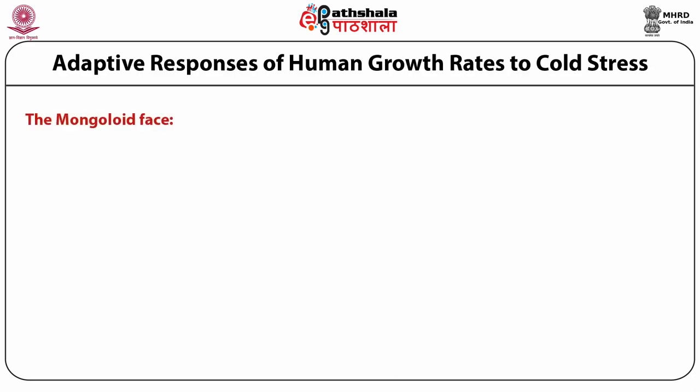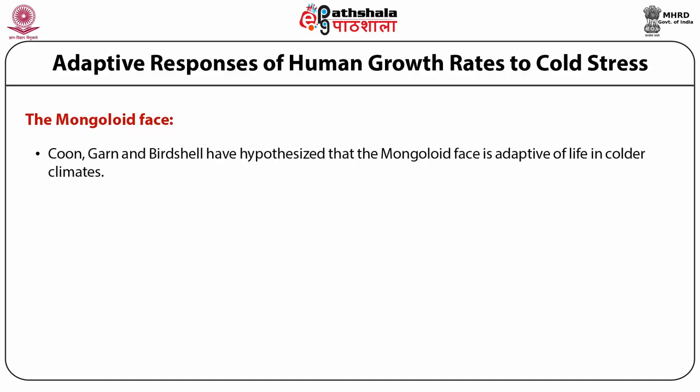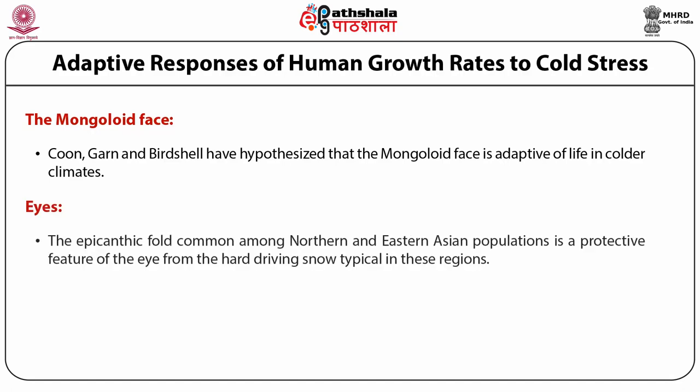The Mongoloid face: Coon, Garn, and Birdsell hypothesized that the Mongoloid face is adaptive for life in colder climates. People living in colder regions such as the Arctic and North Asia have broad, flat faces which help reduce the effects of frostbite. Brow ridges, frontal sinus, and nasal prominence are reduced. Orbital and malar regions are more flattened and widened to retain more layers of fat for additional warmth. In Mongoloids, the epicanthic fold — common among northern and eastern Asian populations — is a protective feature of the eye from hard-driving snow typical in these regions.